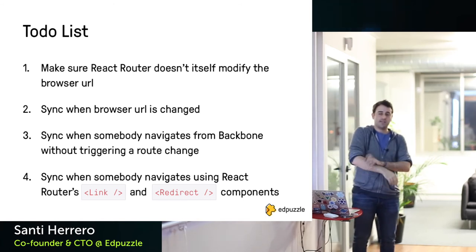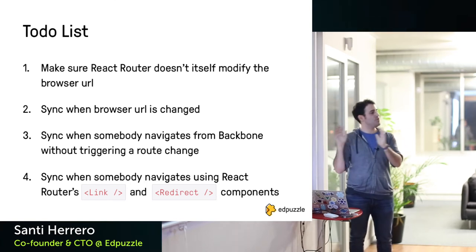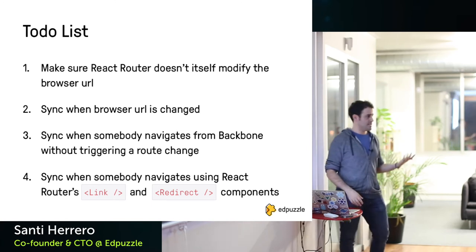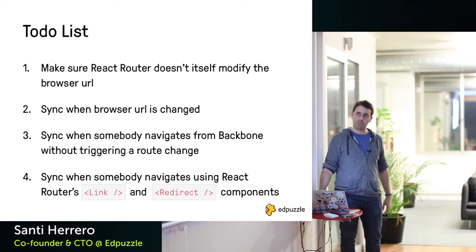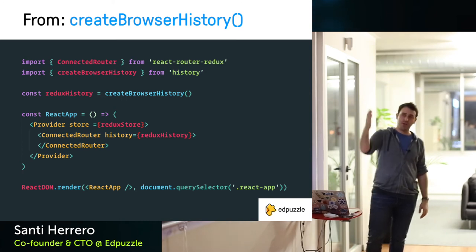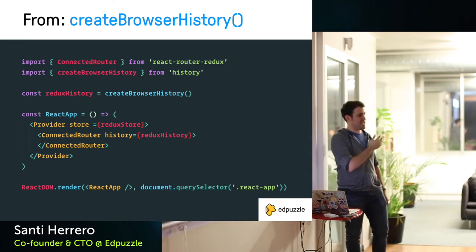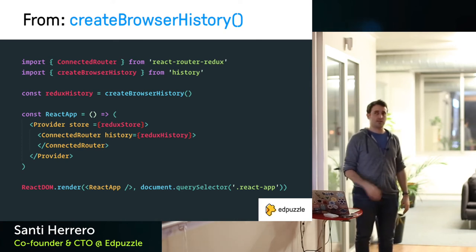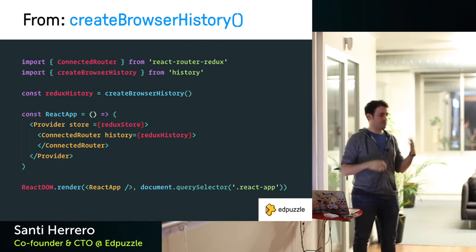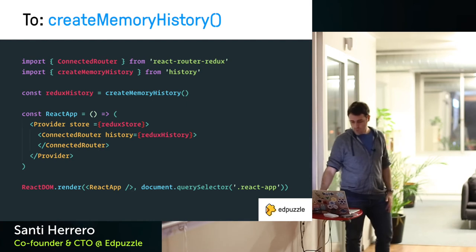Also: when somebody navigates from the React code, you don't want Backbone imperative navigation calls inside React views — that defeats the purpose of writing React code without knowing Backbone. Let's go step by step. Step one: in the React app, instead of using `createBrowserHistory` from the history package that React Router uses internally, you change it to `createMemoryHistory`. Very simple — just one line change — and now React Router no longer has privileges to modify the URL.